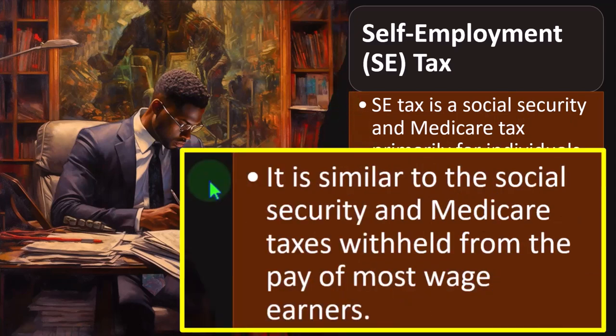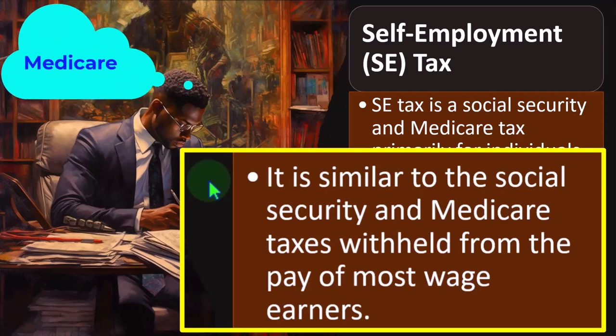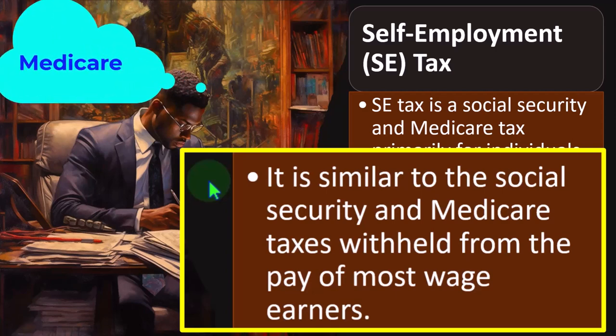SE tax is similar to the Social Security and Medicare taxes withheld from pay of most wage earners. It's useful to think about the comparison, because lawmakers often focus on large corporations and then have to mirror the rules for sole proprietors. Therefore, it's helpful to compare a C-Corporation — a separate legal entity — and how they deal with Social Security and Medicare versus how a sole proprietor does.